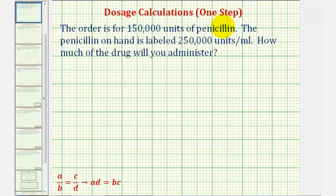Welcome to a one-step dosage calculation. We're given an order for 150,000 units of penicillin, and the penicillin on hand is labeled 250,000 units per milliliter. We want to know how much drug will be administered.